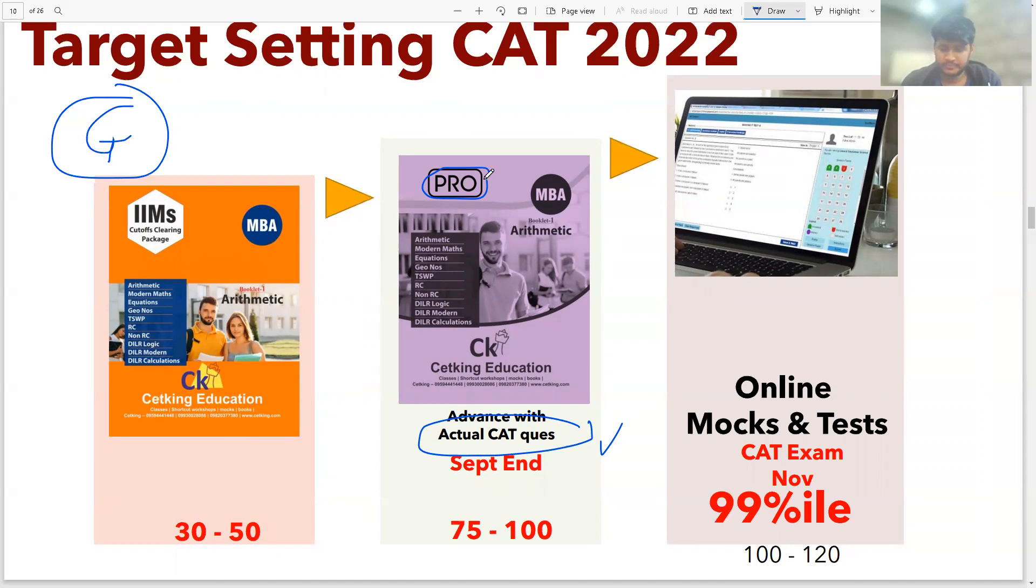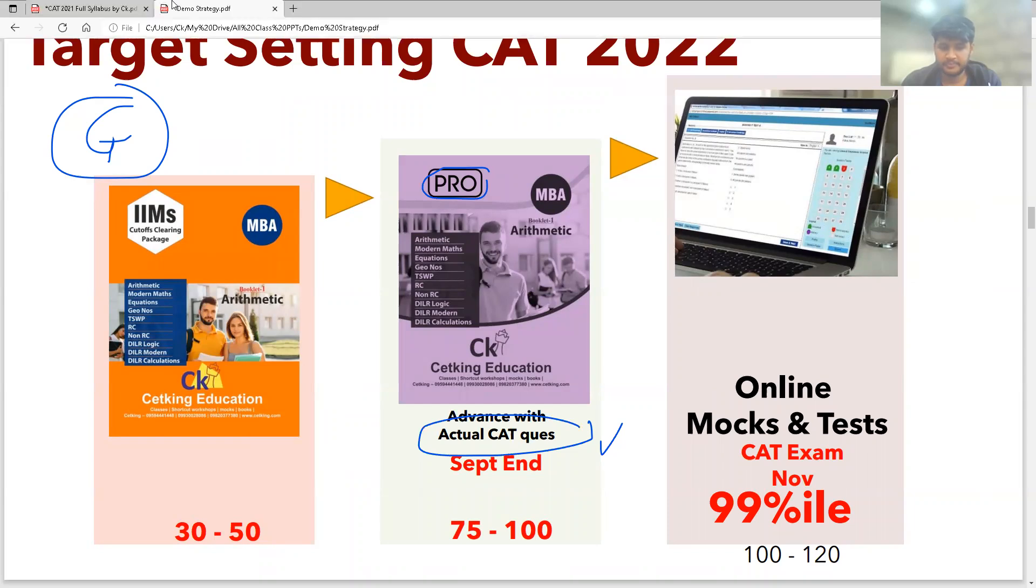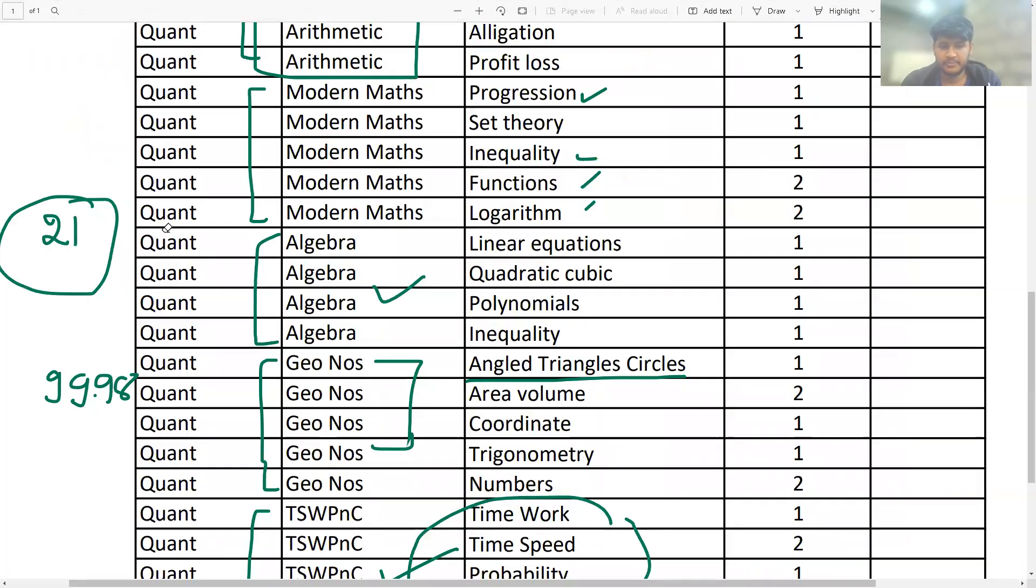So pick up that question. And it might take you even half an hour per question, because there are some CAT questions which are very, very tough. You have to look at the solution to understand. So you want to understand the concept. I think then you can survive the session.